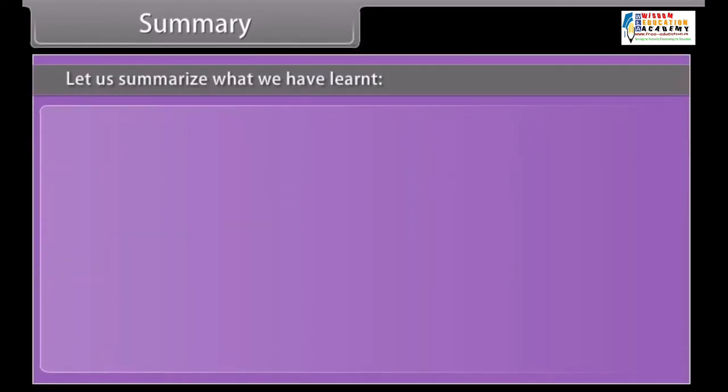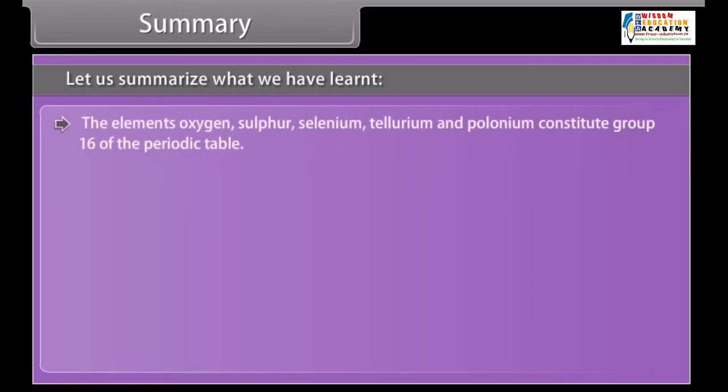Summary. Let us summarize what we have learnt. The elements oxygen, sulphur, selenium, tellurium and polonium constitute group 16 of the periodic table.